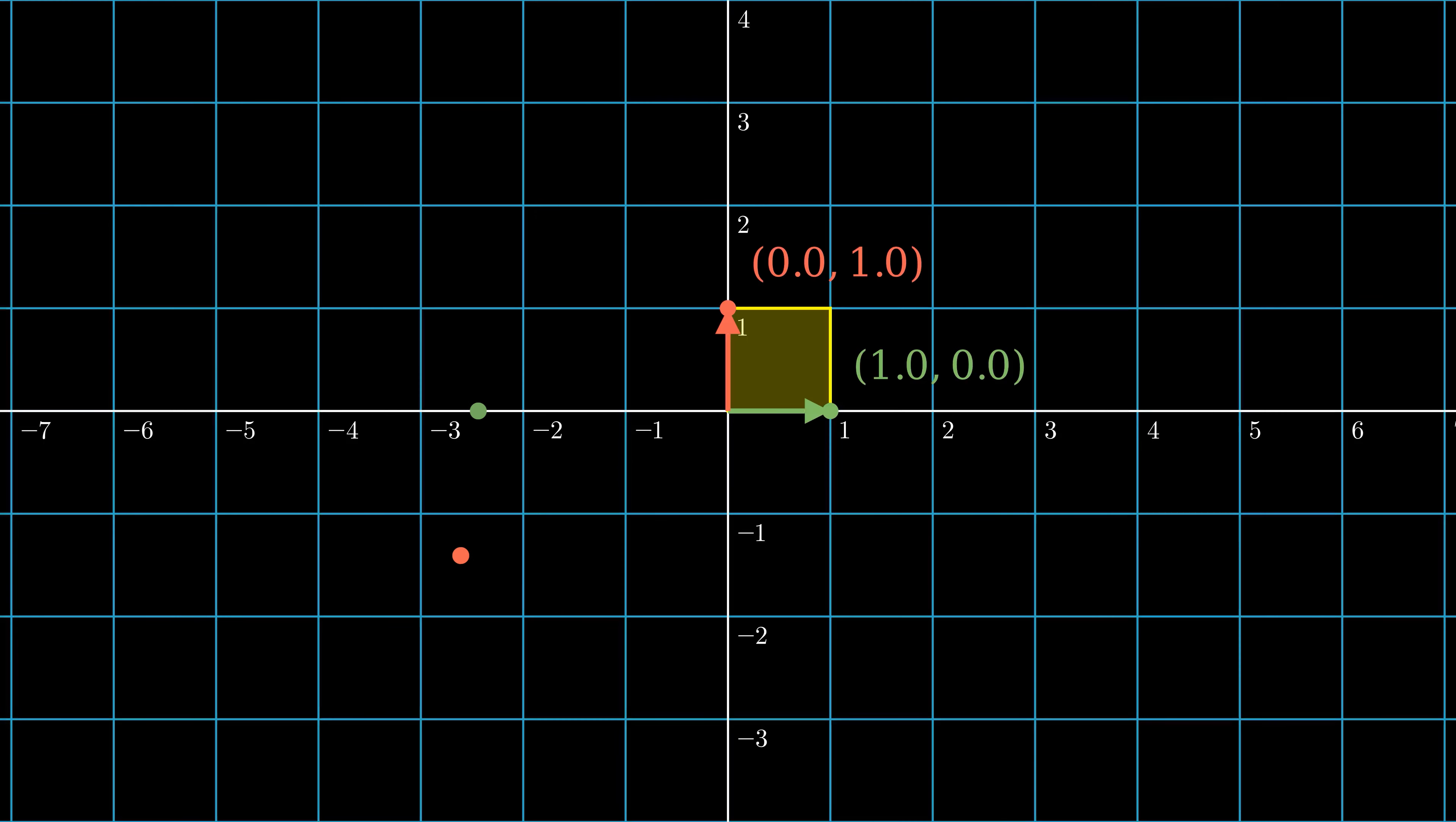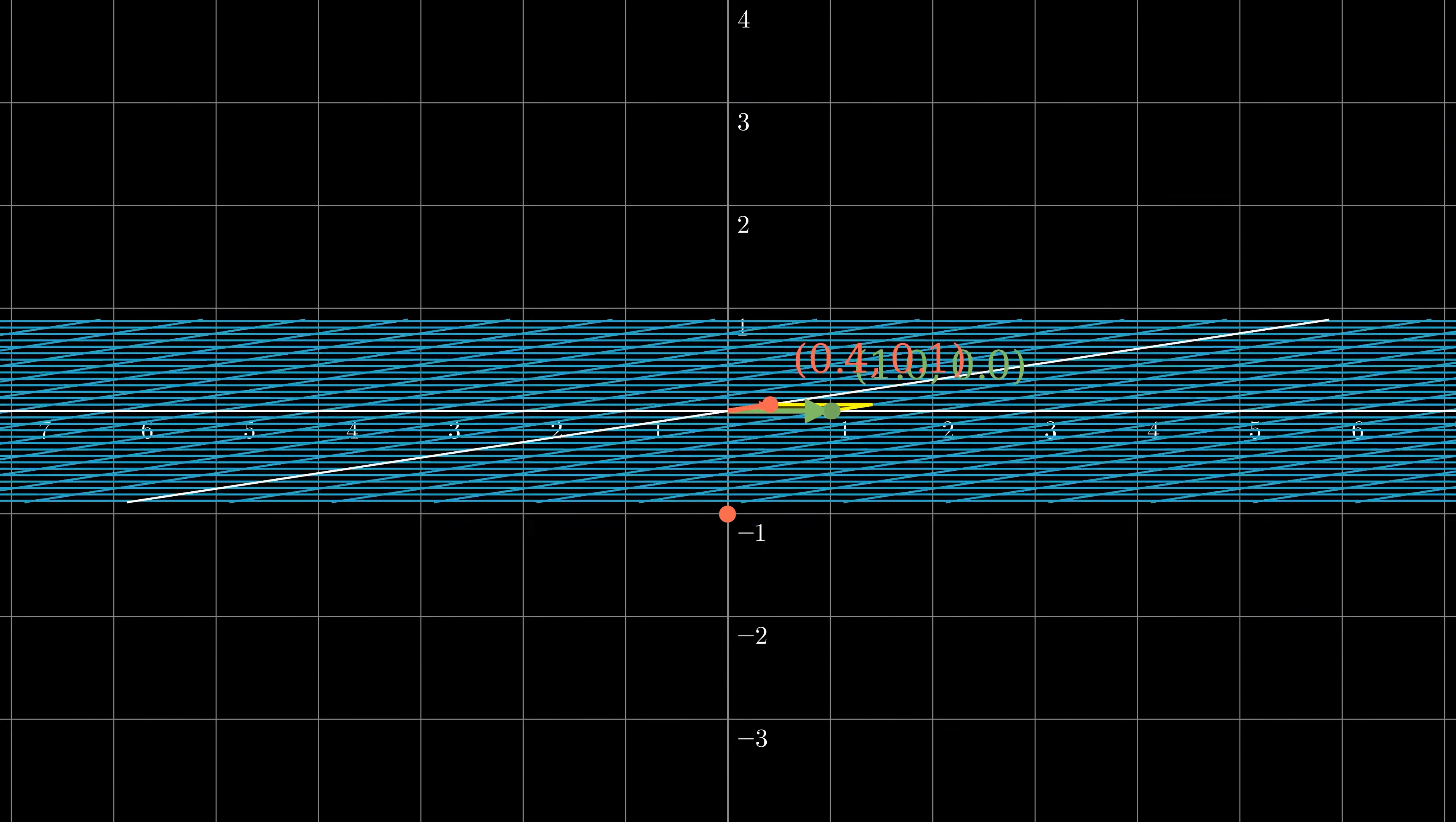Next, we talk about shearing. Similar to the reflection, the shearing also has horizontal shear and vertical shear. Let's look at the horizontal shear matrix.